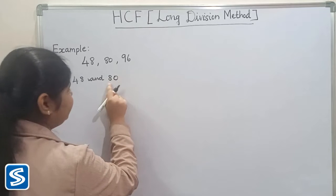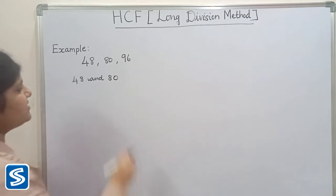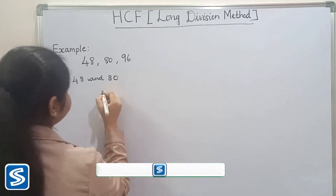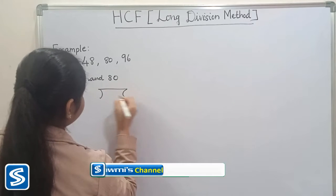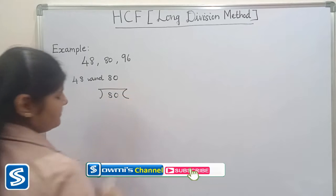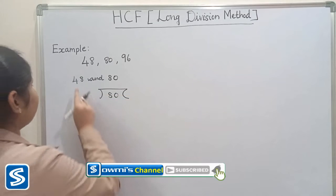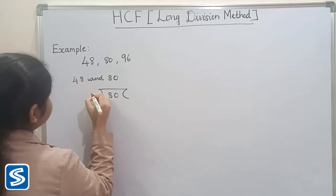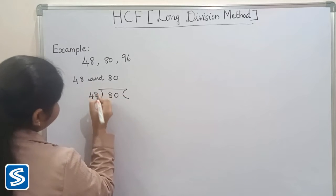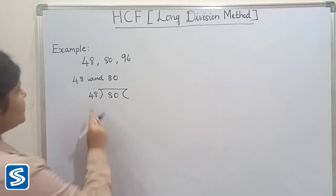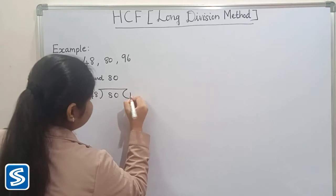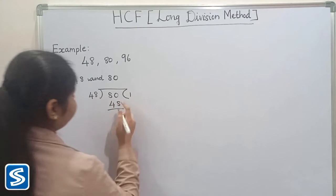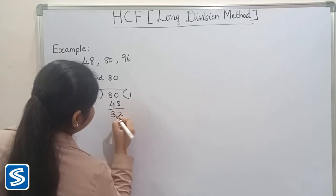Here the largest number is 80, so now we have to consider 80 as the dividend. Here the smallest number is 48, so now we have to consider 48 as the divisor. 48 ones are 48, so the remainder will be 32.